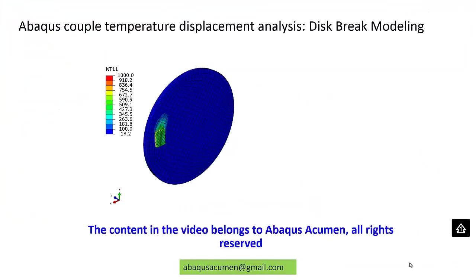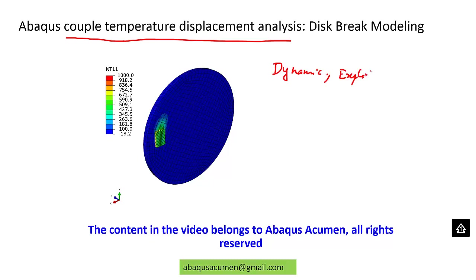Today's topic is coupled temperature displacement analysis, which we are going to solve with Dynamic Explicit. The problem we are taking is disc brake modeling. The disc is rotating at 100 radians per second, then we apply a sudden brake and study the localized temperature distribution in the disc due to friction.